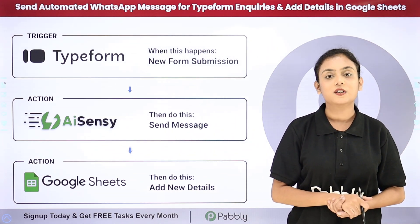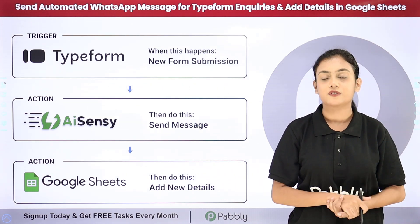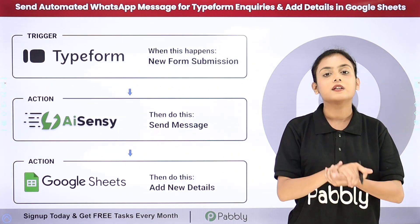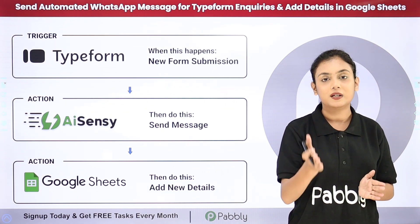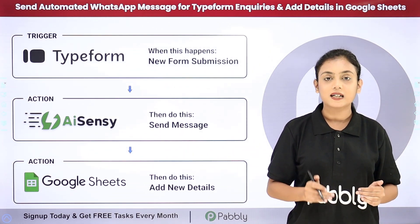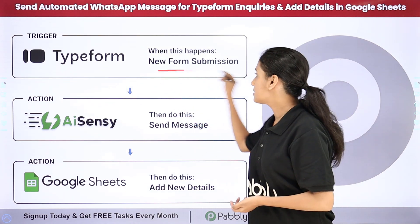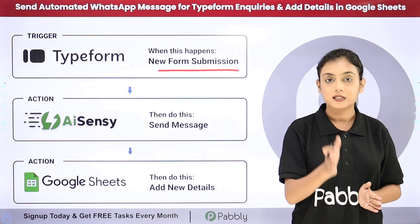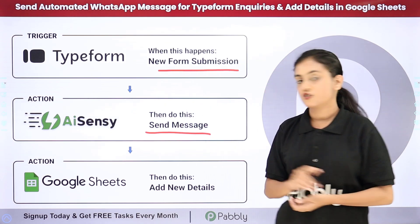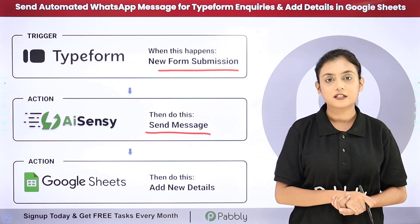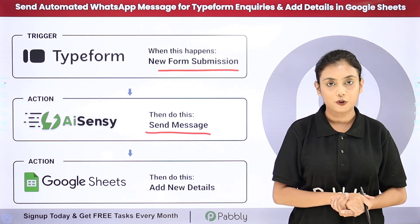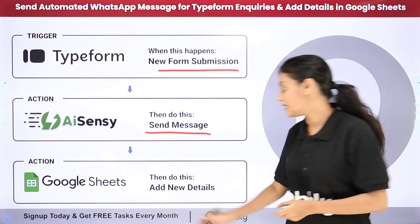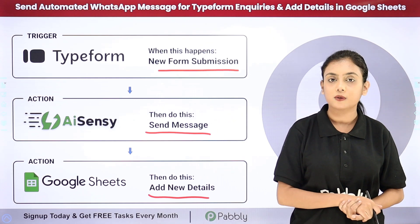I am an owner of a business in which I sell online courses to my students on different topics. I have created a form with the help of TypeForm — a course inquiry form — with the help of which all my students are going to raise their inquiries. My objective is that whenever a new form submission is done, an automated WhatsApp message is sent to the student, thanking them for showing interest and telling them the next steps. After sending the WhatsApp message, I also want to create a record of the inquiry details in Google Sheets.